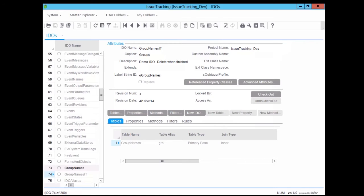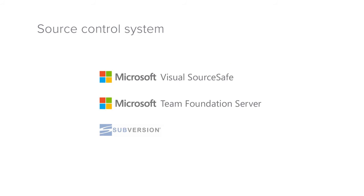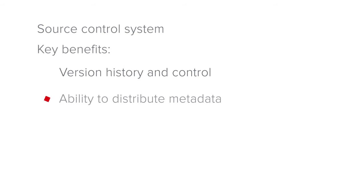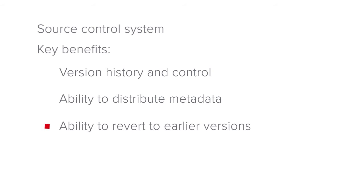Now that we have seen how check-in and check-out operations work for both form-related metadata and IDO-related metadata, let's take a look at source control and what that adds to the mix. Whether you are working with forms or IDOs, one of the key tools that can integrate with Mongoose to provide additional control is a source control system. The use of source control is optional, but it does provide some key benefits such as version history and control and the ability to use the metadata files checked into source control for things like distributing upgrades and fixes to your customers and users. It also allows for reversion to earlier versions in cases where changes have unexpected and undesirable consequences.